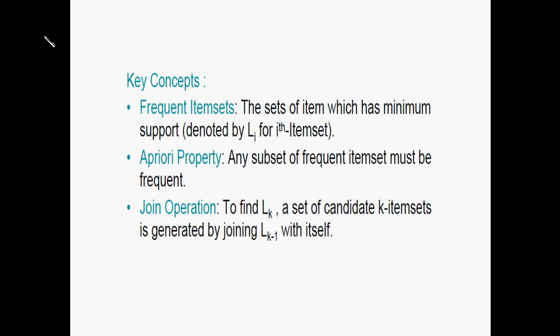We will talk about the three concepts in the Apriori algorithm. One is a frequent item set. The frequent item set is the set L, where minimum support applies. L1 is the set with minimum support of 1 item. L2 is the set with minimum support of 2 items. L3 is the set with minimum support of 3 items. The Apriori Property is the property of the frequent item set.